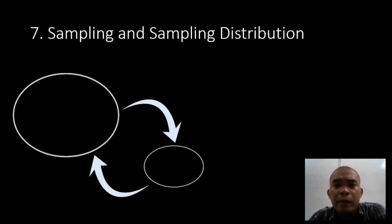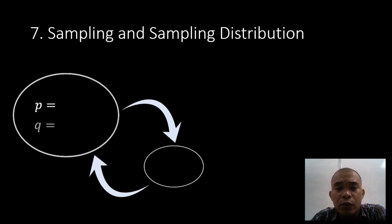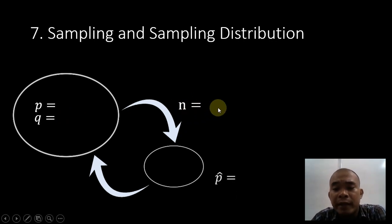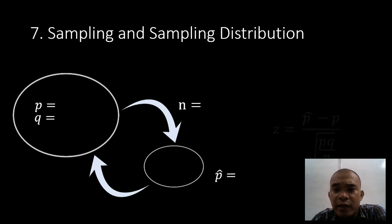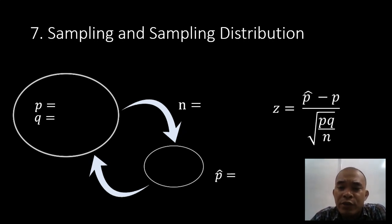If the problem is talking about proportion — the proportion of the population or the sample — we use the third formula. For example, given the population proportion P, Q can be computed simply as 1 minus P. The sample size n is given, and P-hat represents the sample proportion. We will understand more as we solve more problems. If this framework is given, we will use this formula. In the next video, we will solve problems using this formula and this framework.